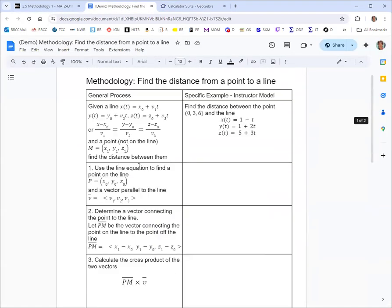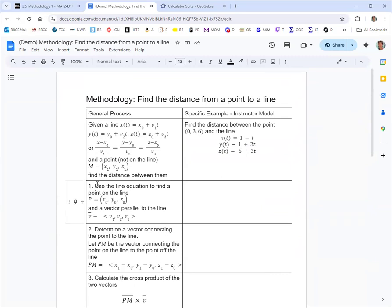You can check that by comparing that y coordinate with the answer to step 4. That'll do it for finding the distance from a point to a line. Remember there's a second methodology for this section, and I'll see you there.